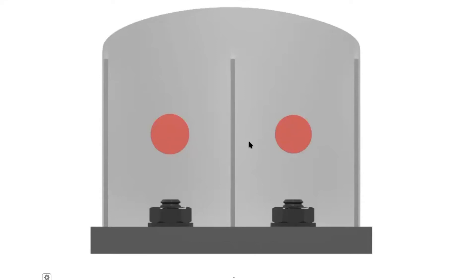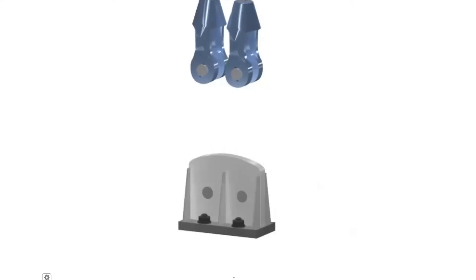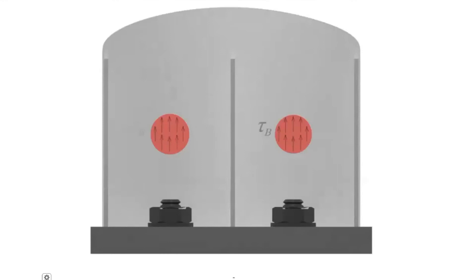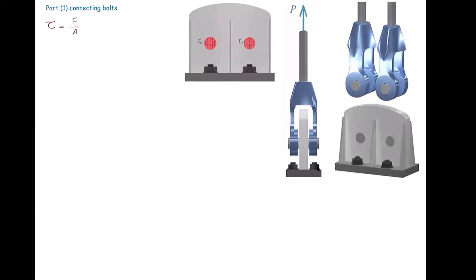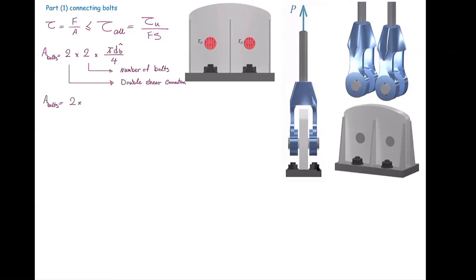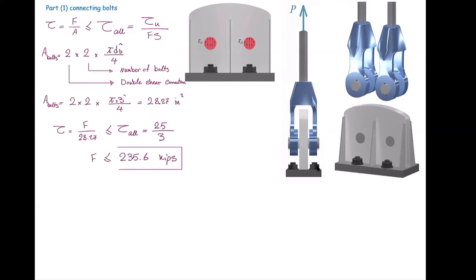We have two other circles on the other side, so in total the area is going to be four multiplied by the area of one bolt. The force, which is upward, is parallel to the cross-section area, producing shear stress. Shear stress equals force divided by area, and must be smaller than the allowable stress, which is yield stress divided by the factor of safety. With two bolts each shearing on two planes, the area is 4 × (π d² / 4). Plugging in gives the force causing shearing failure in the bolts.